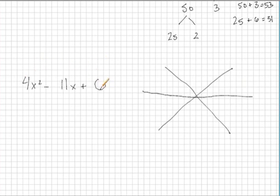So in the top triangle, we're going to multiply the outside numbers and put that number in there. 4 times 6 is 24. In the bottom triangle, we just put the inside number, negative 11. In the top left and top right triangles, I just put the first number, 4 and 4.